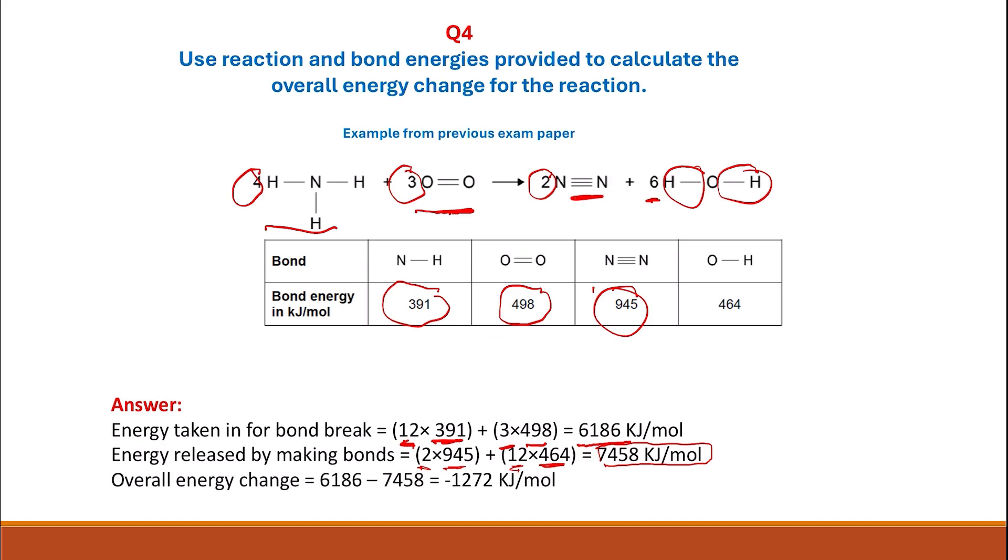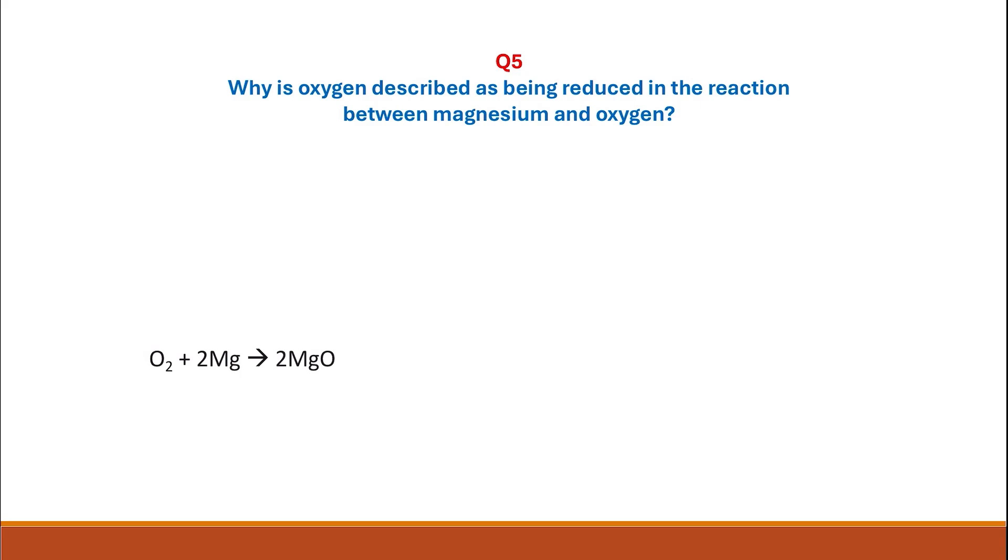The overall energy change is the energy taken in for bond breaking minus the energy released by formation of bonds. The answer is minus 1272 kilojoules per mole. The value is negative because this is an exothermic reaction. Question 5.